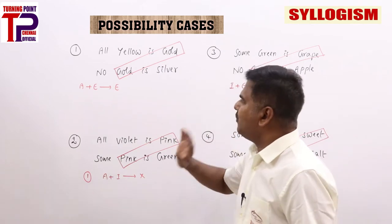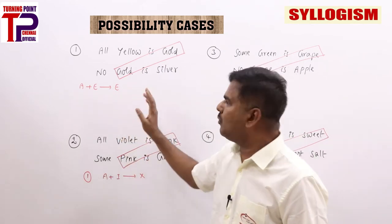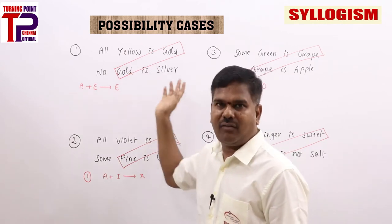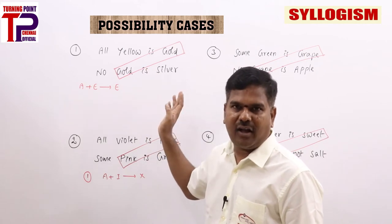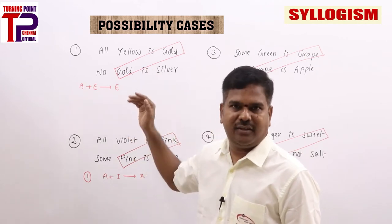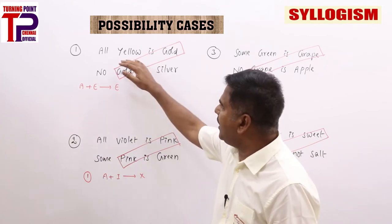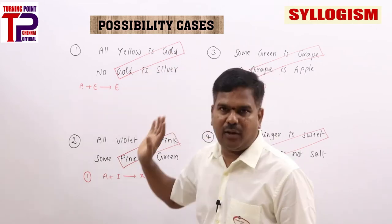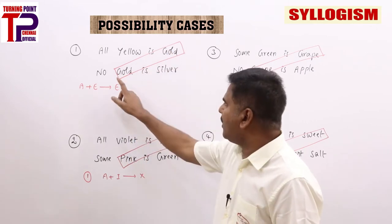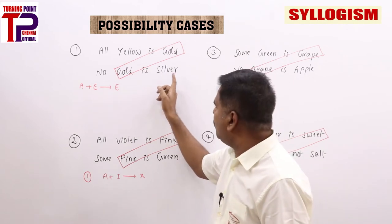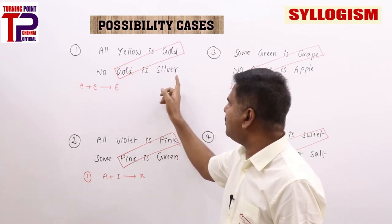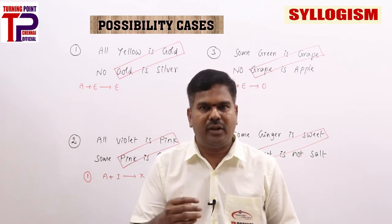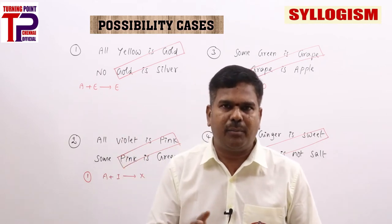Let's discuss. First question: A plus E is E — you get 'no yellow is silver,' 'no silver is yellow,' 'some yellow is not silver,' 'some silver is not yellow,' 'some yellow is gold,' 'some gold is yellow.' Next, 'no gold is silver' can be converted to 'no silver is gold,' 'some gold is not silver,' 'some silver is not gold.' All these conclusions come into picture.